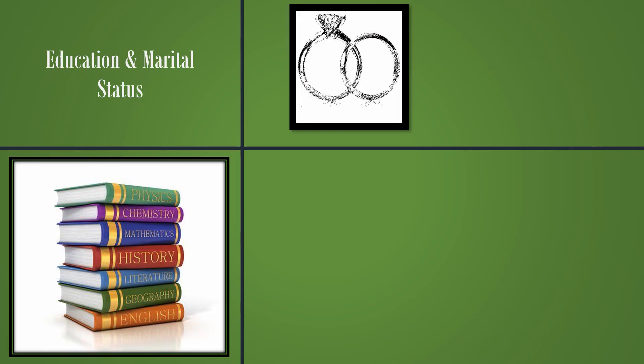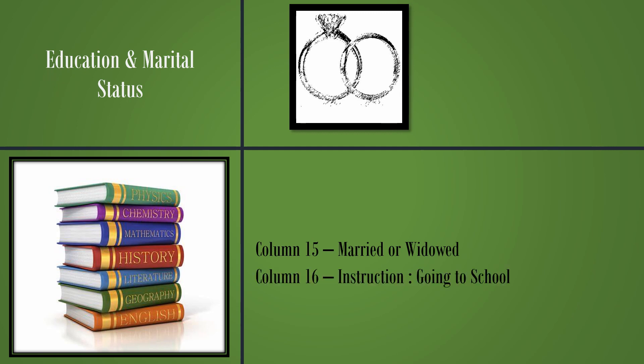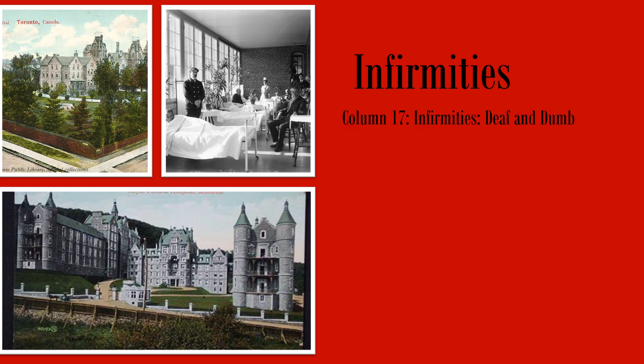The education and marital status section is a little different — there are only a couple of questions. Column 15: are you married or widowed? Column 16: instruction — are you going to school? For infirmities, same questions: Column 17: deaf and dumb. Column 18: are you blind? Column 19 is now called 'of unsound mind.' You can see the little changes going on in society — they're not calling people idiots and insane anymore; they're calling it unsound mind.